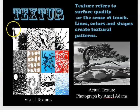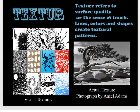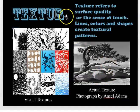Texture refers to surface quality — whether it's visual textures you're creating or actual textures you're photographing. Like American artist Ansel Adams, one of America's most prominent black-and-white wildlife photographers — this was all pre-digital with big cameras and dark rooms. He was the master of capturing textures whether very close or very far. Texture is about surface quality.